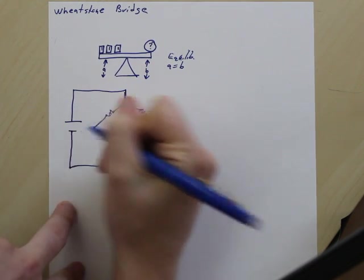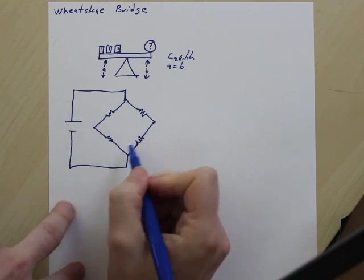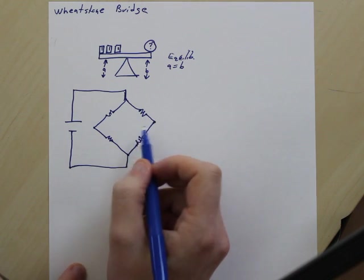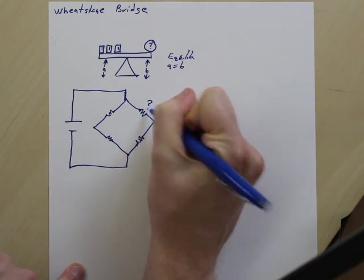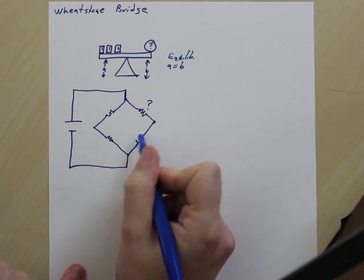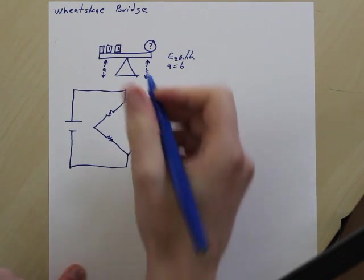So what the Wheatstone is going to do is let us find a resistance. So if we don't know the resistance of a sensor or maybe that resistance changes or whatnot, we're going to try to find out what that resistor is. And this resistor down here, we're going to have a fixed value, and this resistor, we're going to have a fixed value.